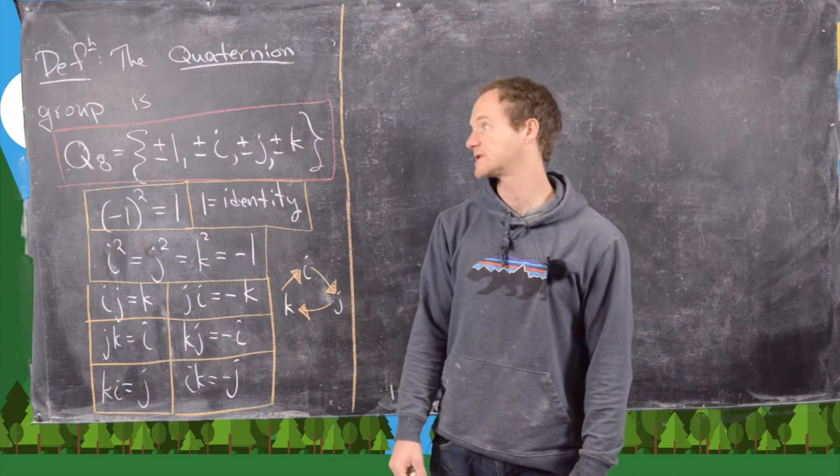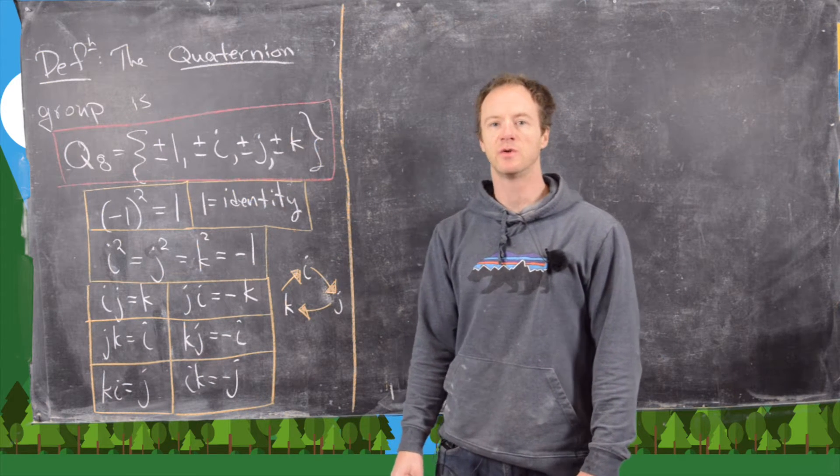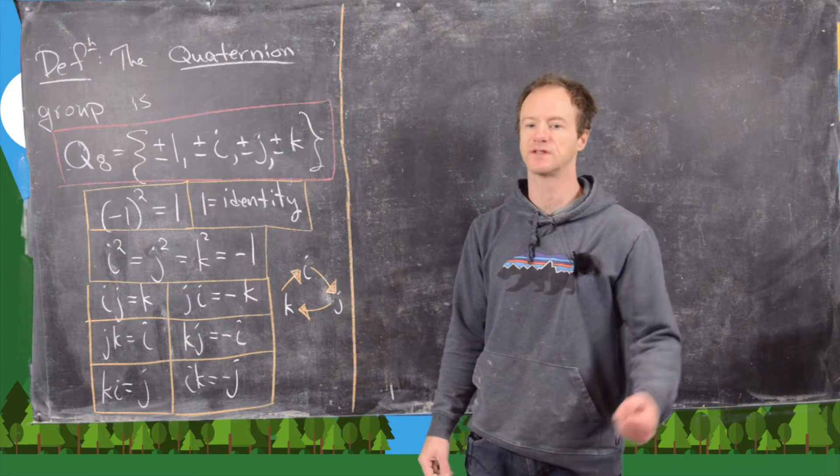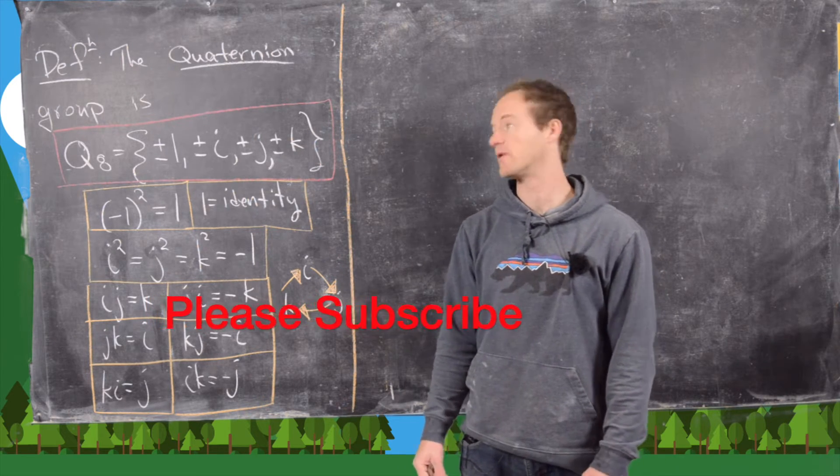Okay, in this video we want to look at something called the quaternion group, which is a nice non-abelian group of order 8. In other words, it's a non-commutative group of order 8.